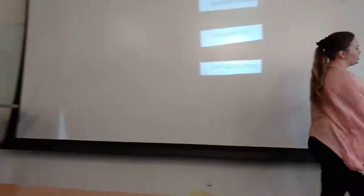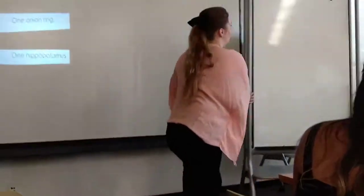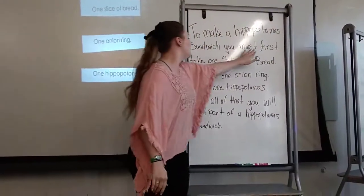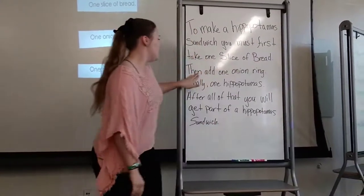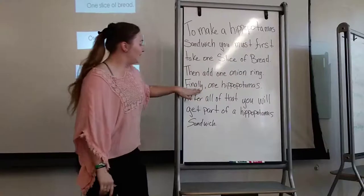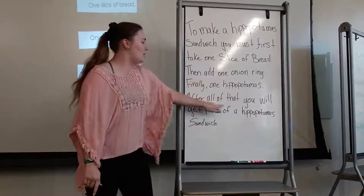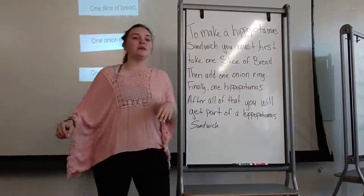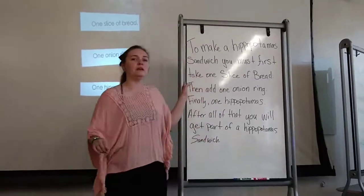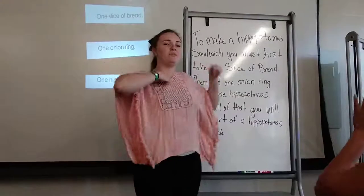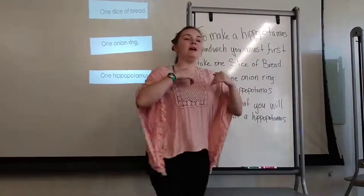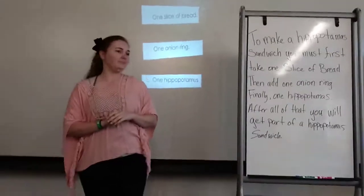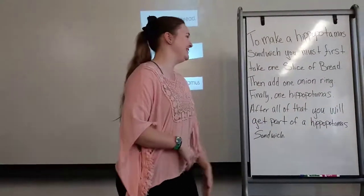So I took these three directions and I wrote a paragraph. It says: To make a hippopotamus sandwich, you must first take one slice of bread, then add one onion ring, finally one hippopotamus. After all that, you will get part of a hippopotamus sandwich. So can anyone tell me if I have temporal words in here? Can you raise your hand? Ashlyn, do I have temporal words in here? Yes. Perfect. Can you come up and underline one of the temporal words?